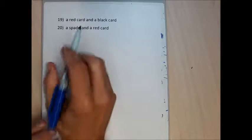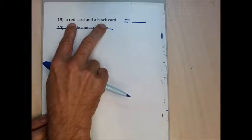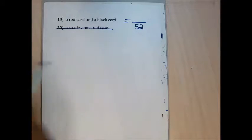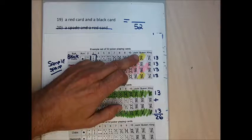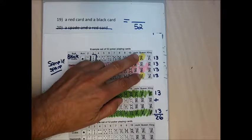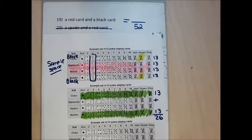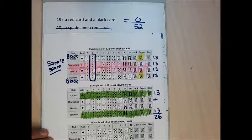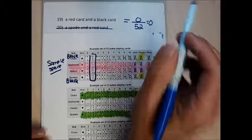For problem 19, the probability of getting a card that's both red and black: cards are either red or black, never both. The numerator is zero because no card is simultaneously black and red. The answer is zero — it's impossible. Unlike the previous problem where there were cards that were black and a queen, here there are no cards that are both black and red.